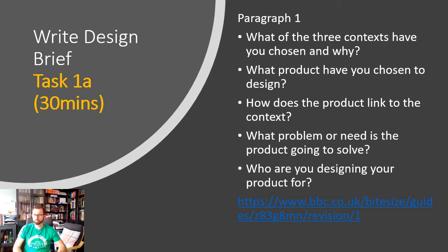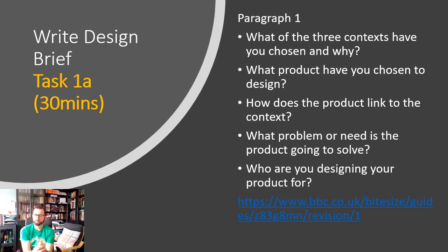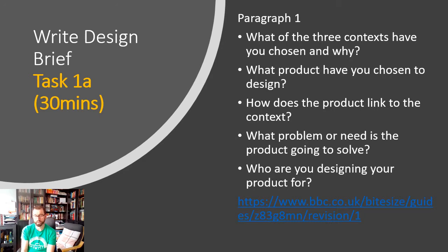What problem or need is the product going to solve? For example, you might say: I'm making a lamp for homework, it relates to teenage lifestyle or multifunctional living, and it's going to solve the problem of my workstation in my bedroom being too dark to do work at night. That adds real detail and explains what problem you're trying to solve, helping someone understand exactly what you're designing and why. Then, very briefly linked to last lesson, who are you designing your product for? Just a single sentence explaining who your client is — they can read the full client profile for more information.